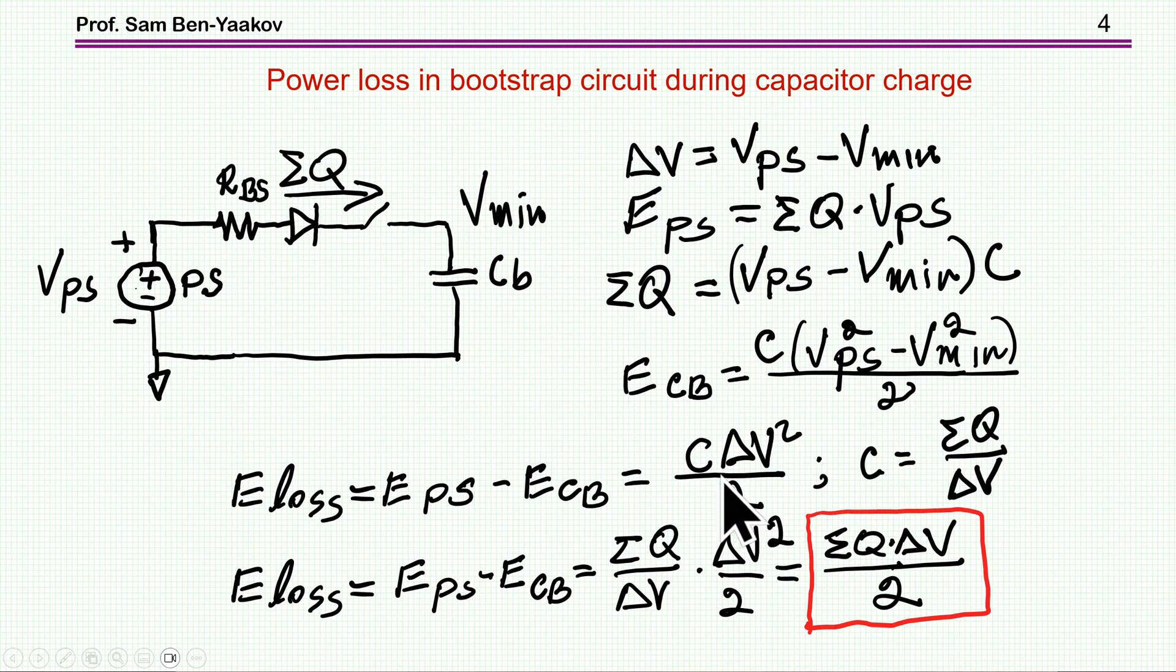This is well known: C*delta V^2/2 is the energy lost. C, on the other hand, is chosen such that we'll have a drop of delta V for this amount of charge that has to be passed. The amount of charge divided by delta V will be the required C. I can now convert this to a more convenient equation by replacing C with this value here. By this, I'm getting this handy equation, handy because it includes parameters that I know offhand.